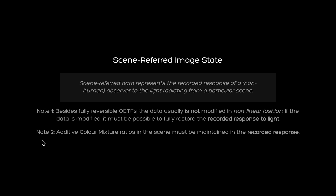In contrast to the CIE definition, I would explicitly state that we are expecting the encoding of a non-human observer, avoiding the word "color" at all. Note 1 clarifies that data altered for coding or workflow efficiency — like camera log encodings — is still scene-referred data because we can calculate back to the response. Note 2 is a bit tricky to grasp without further explanation — as a spoiler, this disqualifies chromogenic film or any other subtractive acquisition formats.